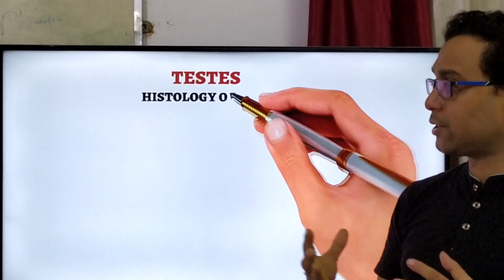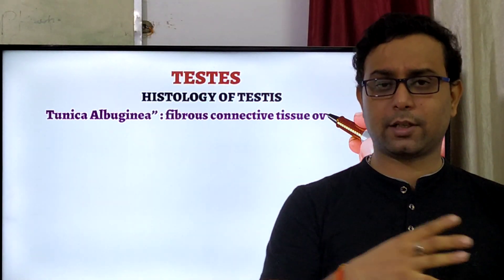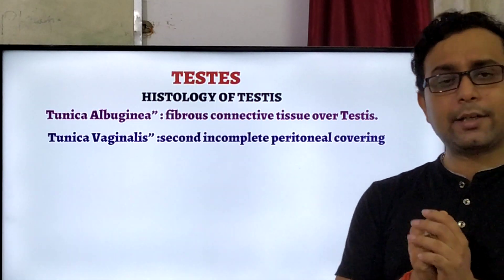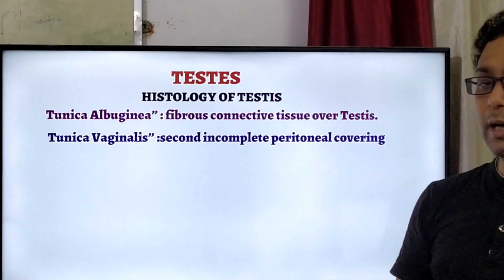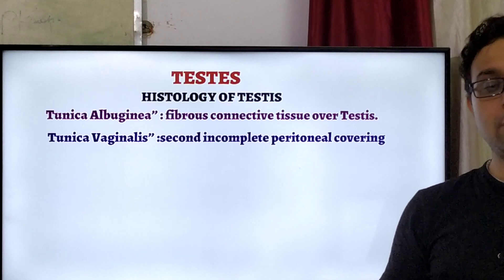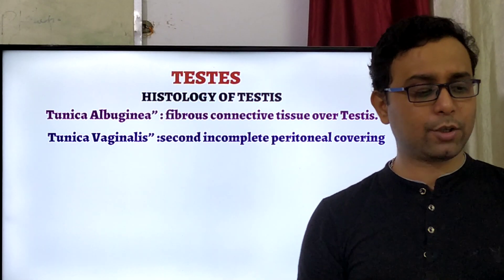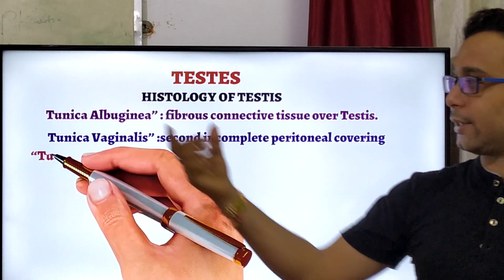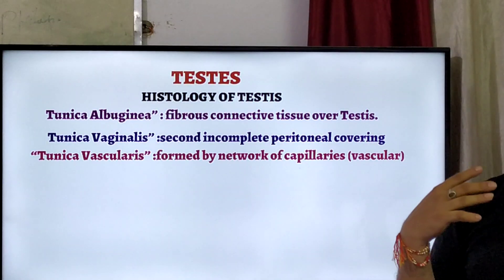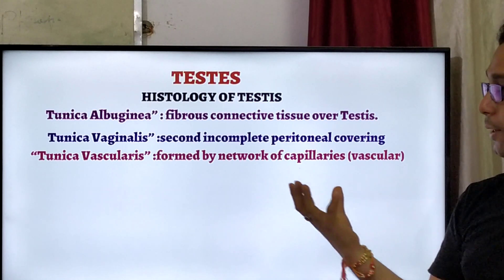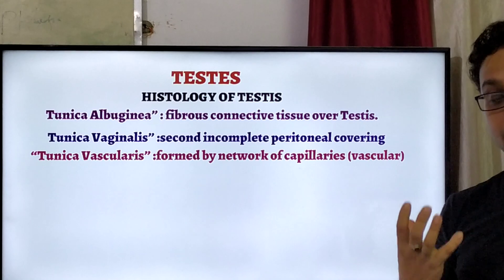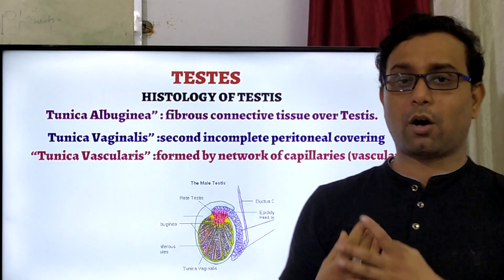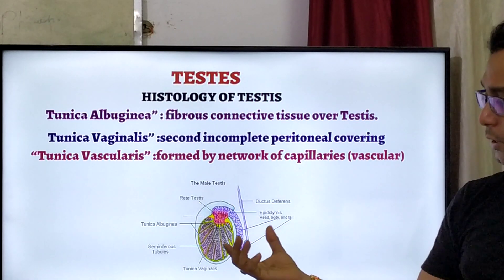Now we discuss the structure of the testis. The testis has two parts — external structure and internal structure — but we discuss the histological internal structure. The testis is covered by a membranous fibrous connective tissue called the tunica albuginea. On the other hand, the tunica vaginalis is the second incomplete peritoneal covering. The most important covering is the tunica albuginea. The tunica vasculosa is another part, formed by a network of capillaries — the third layer present above the testis — playing an important role in protection and nutrition of the testis.